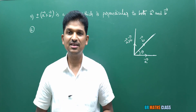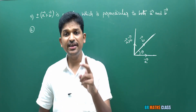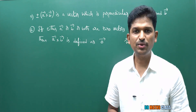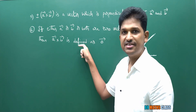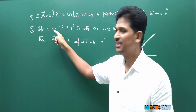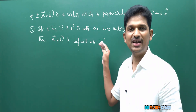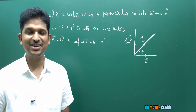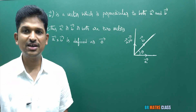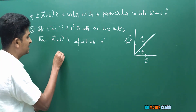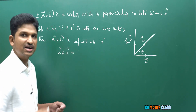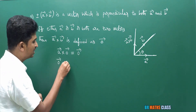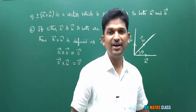Last point: in the definition, we took a̅ and b̅ as non-zero vectors. But if either a̅ or b̅ or both are zero vectors, then a̅ cross b̅ is defined as zero vector. This is how the textbook defines it. So a̅ cross zero bar = zero bar, and zero bar cross b̅ = zero bar.